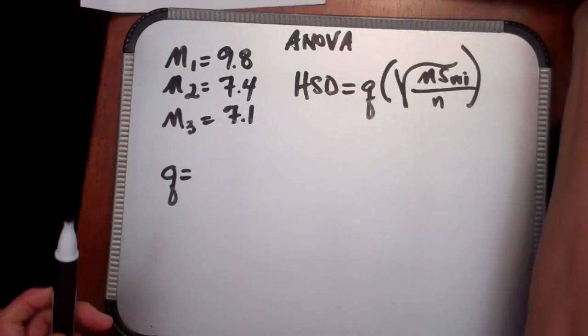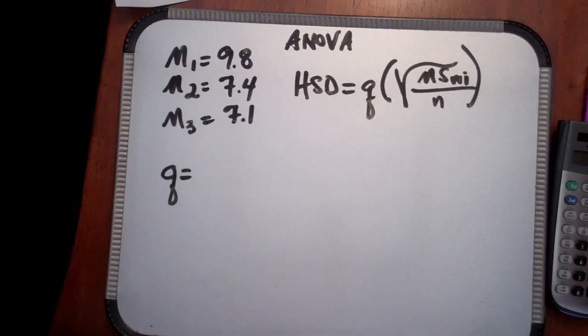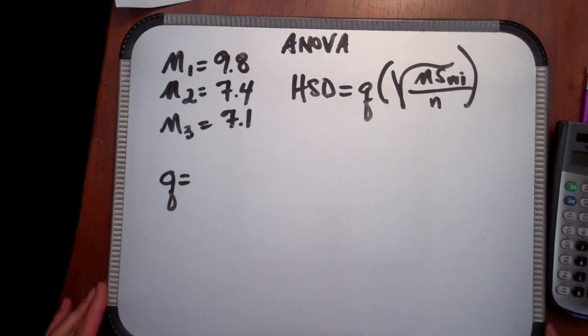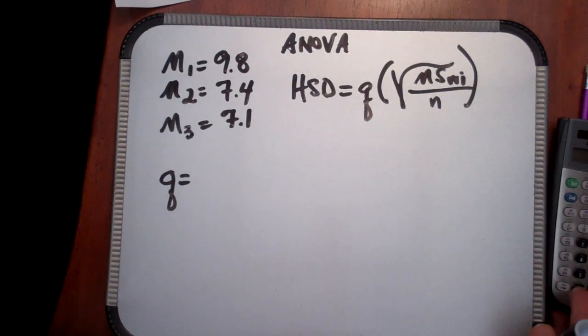Now you're at the point in the calculation of your ANOVA where you have to figure out where the significant differences occurred between your groups.